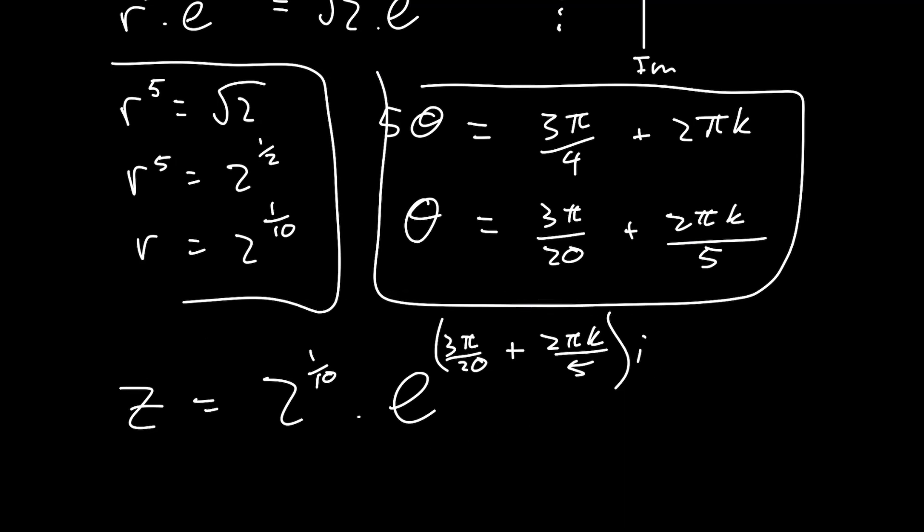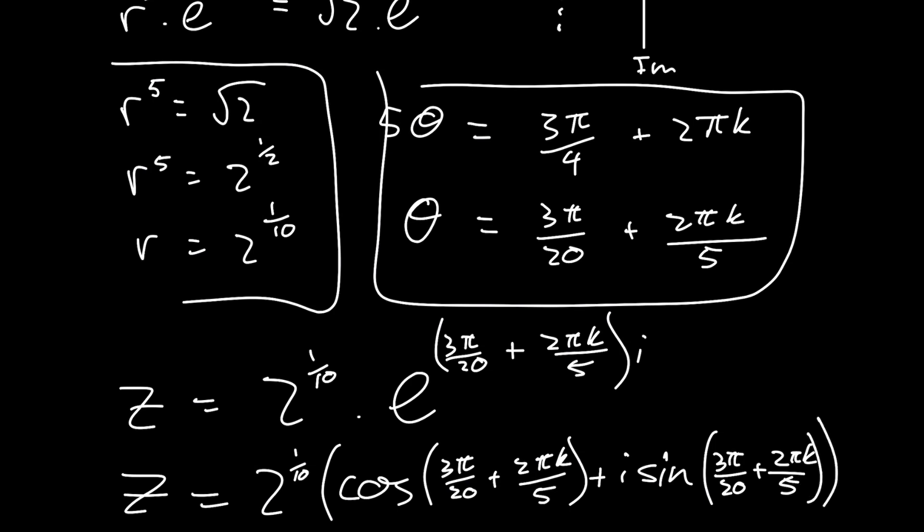but if we were asked to put this into polar form, what we would first need to do is put it into a trigonometric form. So I'll go and do that for you now, which is another modulus argument form. So we have z is equal to two to the power of one over ten into cosine of the argument, which is three pi by 20 plus two pi k by five, plus i sine of the same argument, which is three pi by 20 plus two pi k by five.